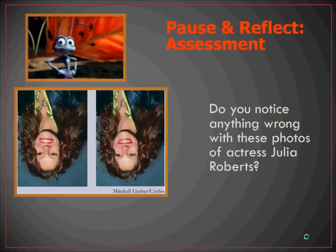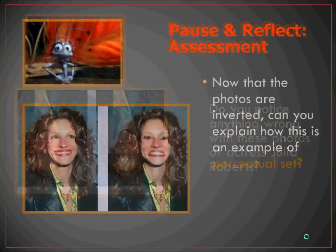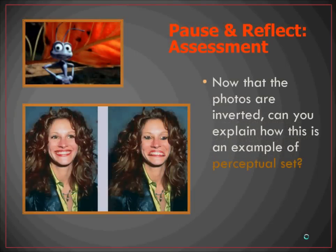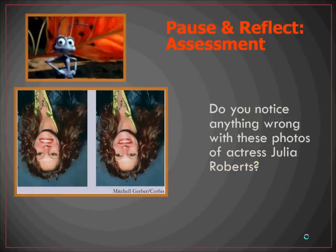Lastly, do you notice anything wrong with these photos? Looking at these pictures of Julia Roberts, some may view them as probably the same or not having a whole lot wrong. But if we just flip them, we find — oh my goodness — a typical regular picture of Julia Roberts on the left, and an image on the right where her eyes and mouth were turned upside down. Think about how this might be related to perceptual set and how you may expect to see Julia Roberts — how that was related to the prior image looking at her upside down. In fact, in the picture on the left, her eyes and smile are right side up.